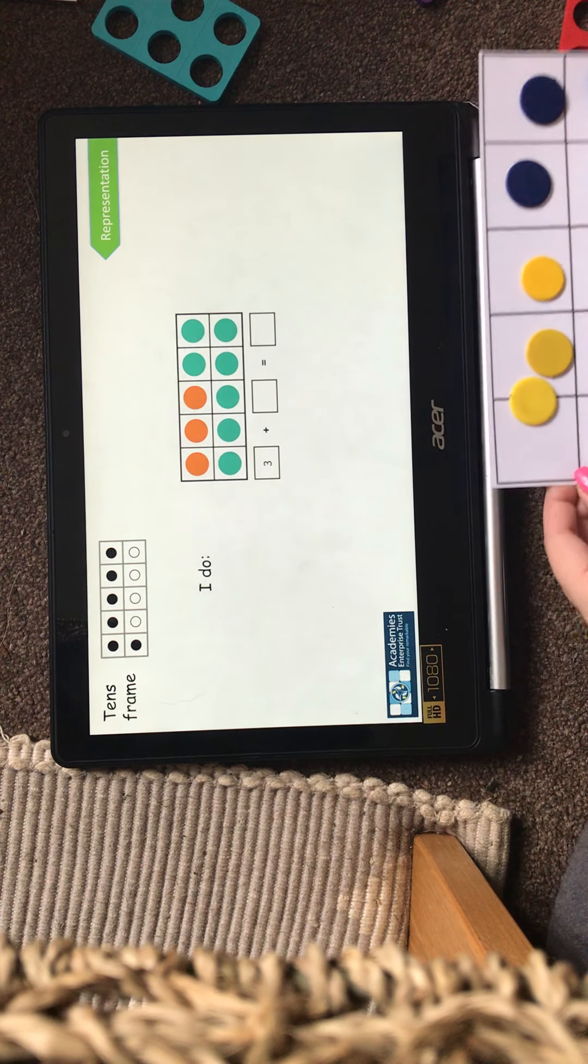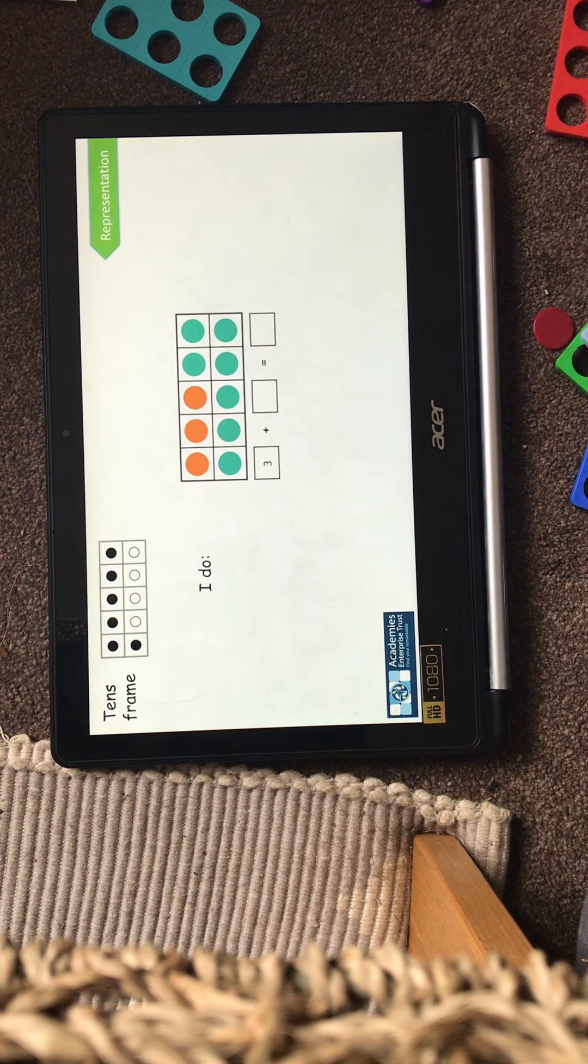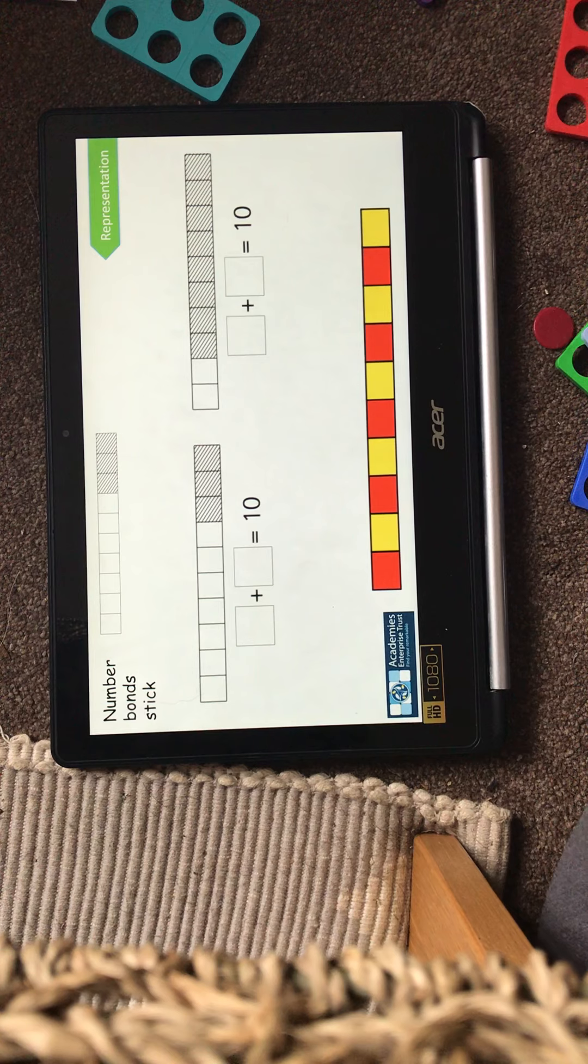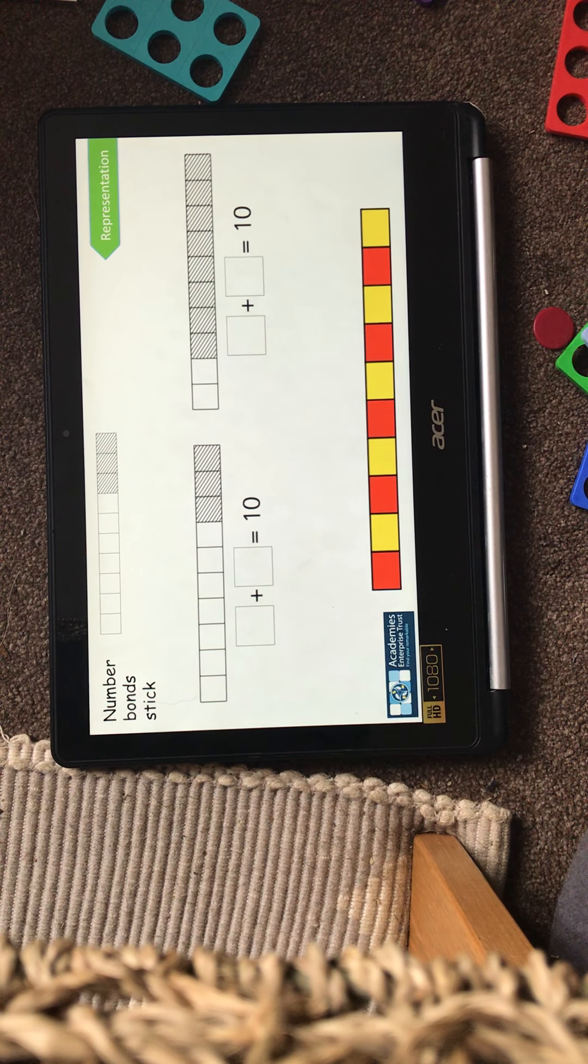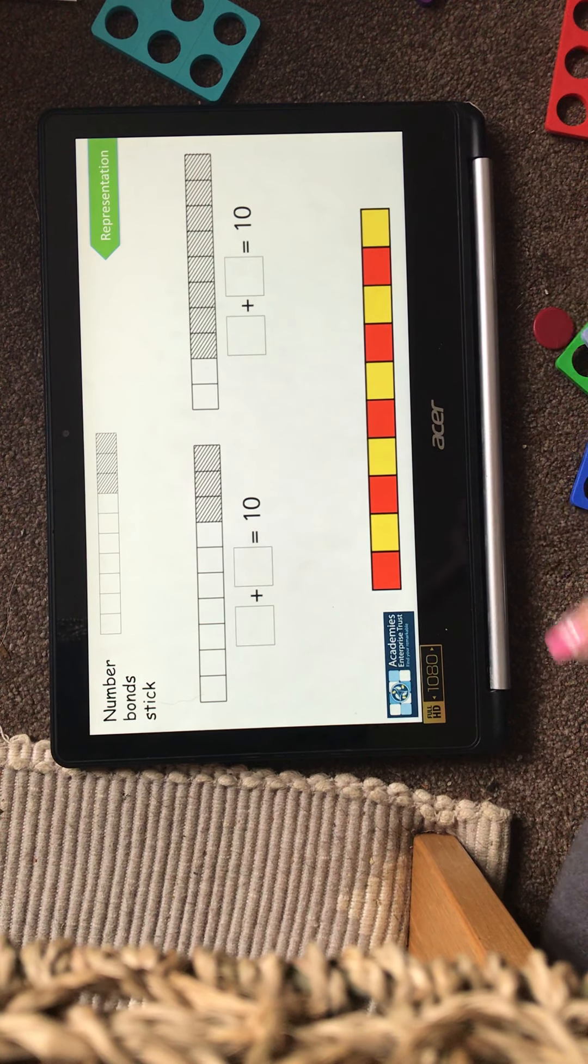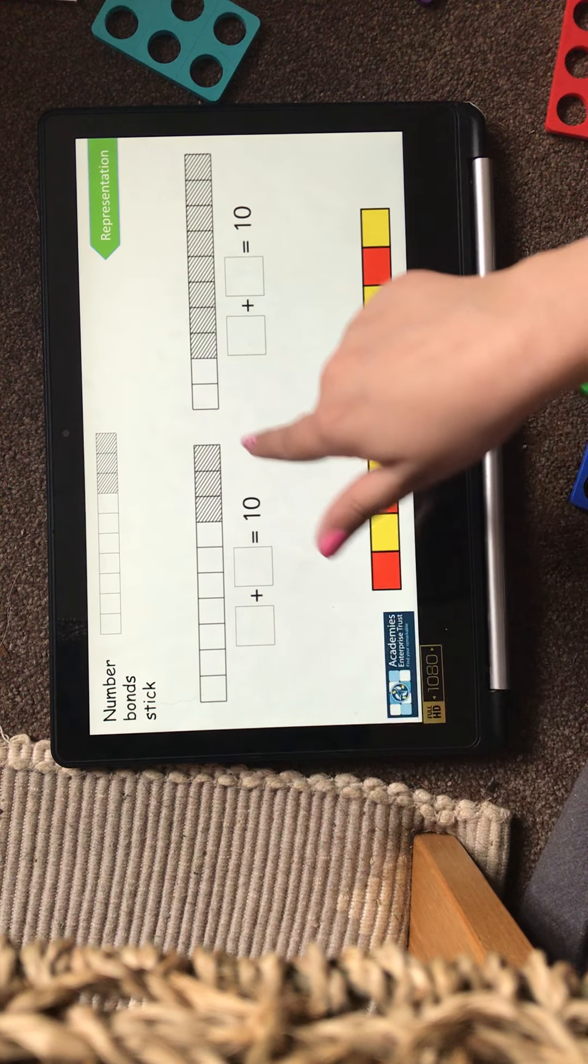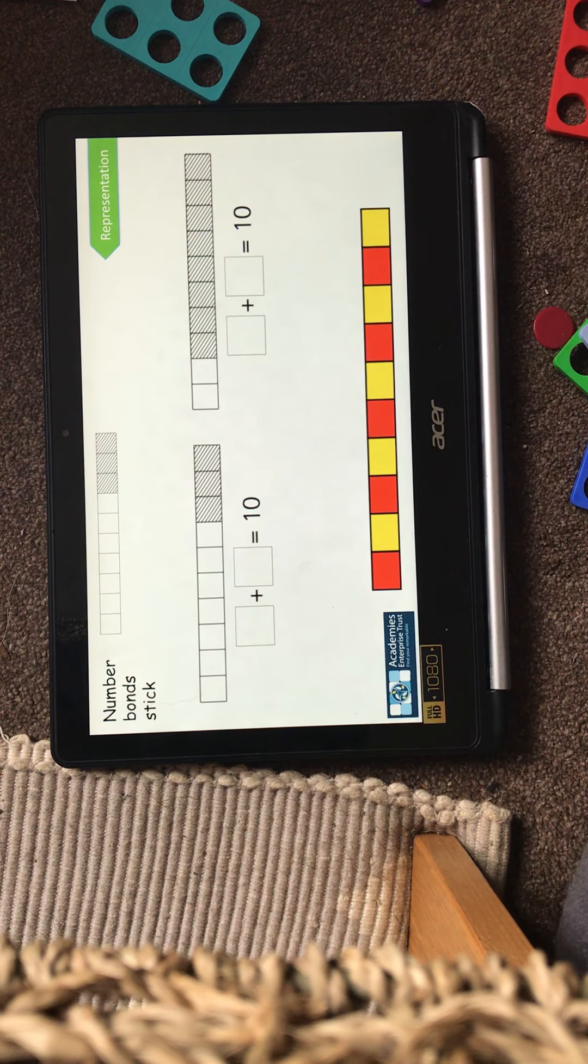So I can use my 10s frame. And I can use my number sticks, or my counting sticks, or a number line, which we're getting very good at using. For example, here, I want to know something adds something equals 10. And I'm going to use this representation, so this visual picture, to help me out.